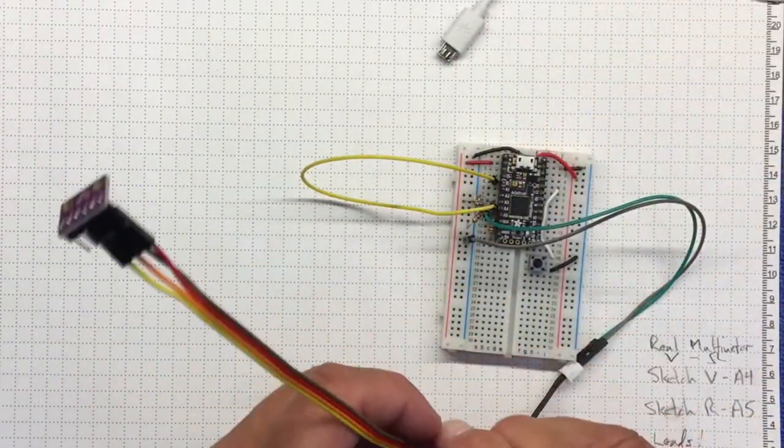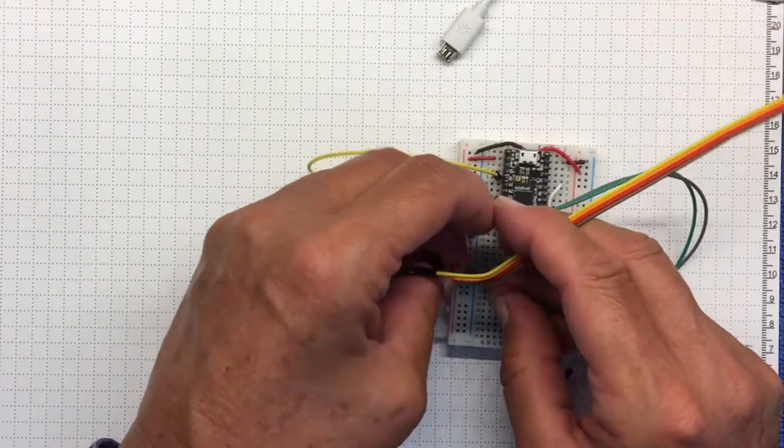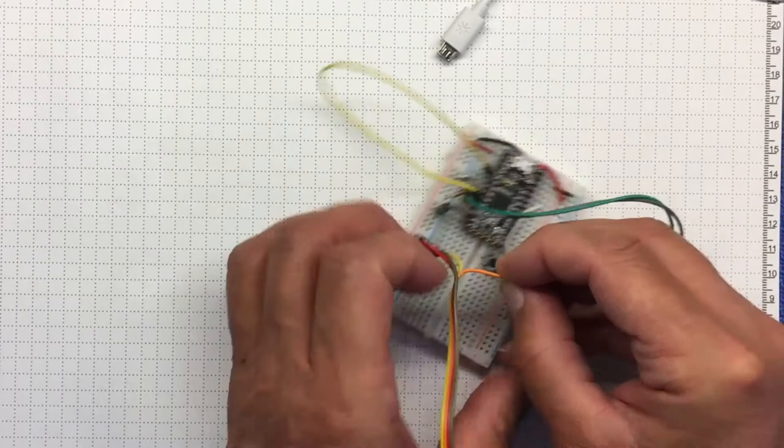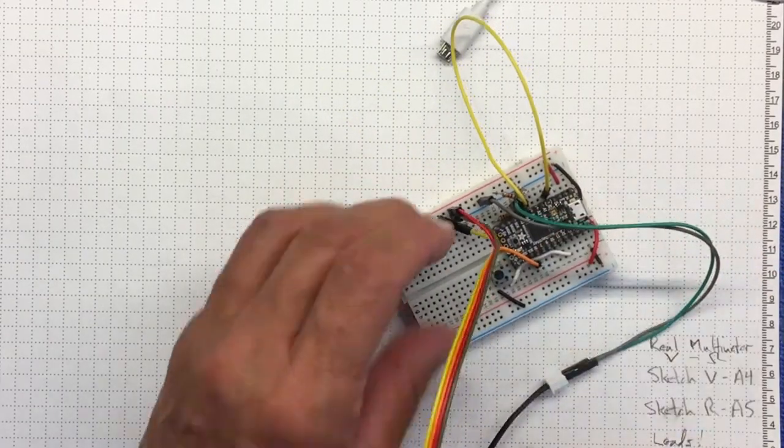Unplug the power from the microcontroller, then connect the power and ground leads for your transducer, and the SDA and SCL lines for communication.